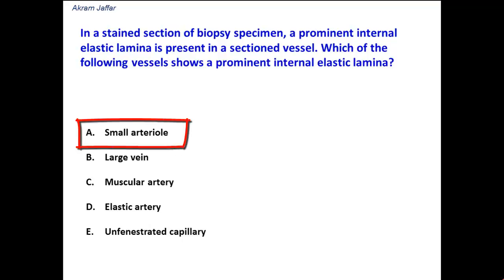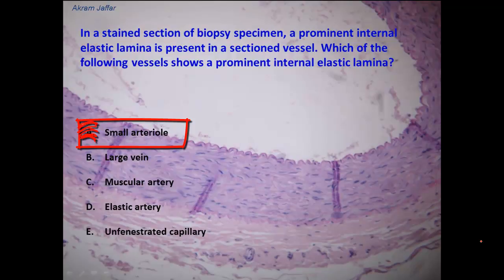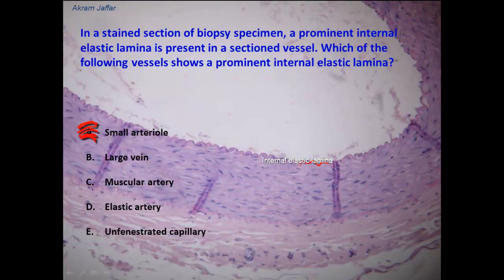In a small arteriole, there is no internal elastic lamina. This is to show you a section in an artery where you can see the irregular internal elastic lamina located between the tunica intima and the tunica media.